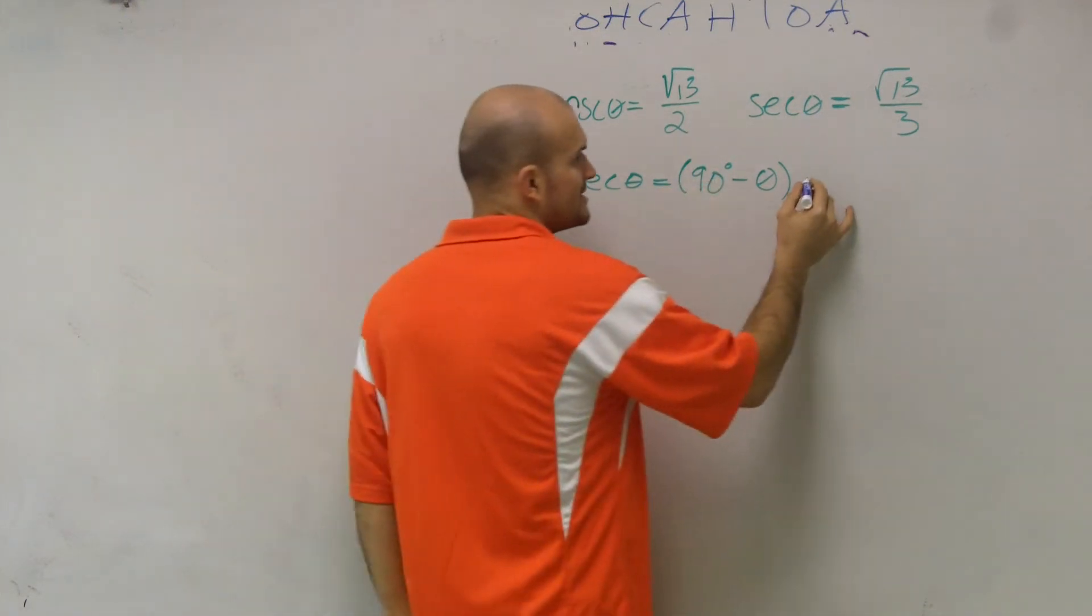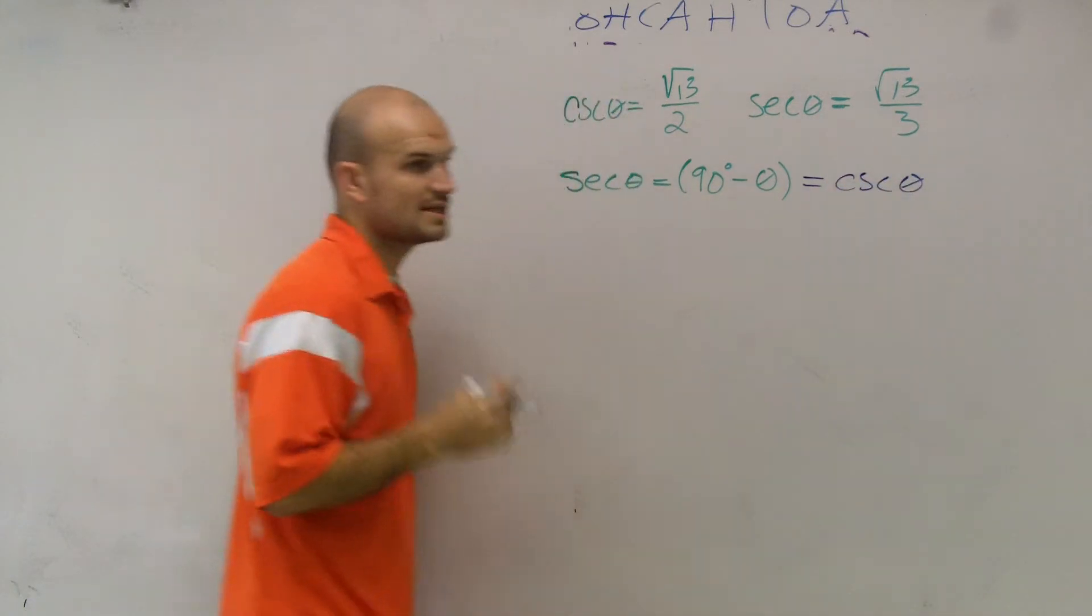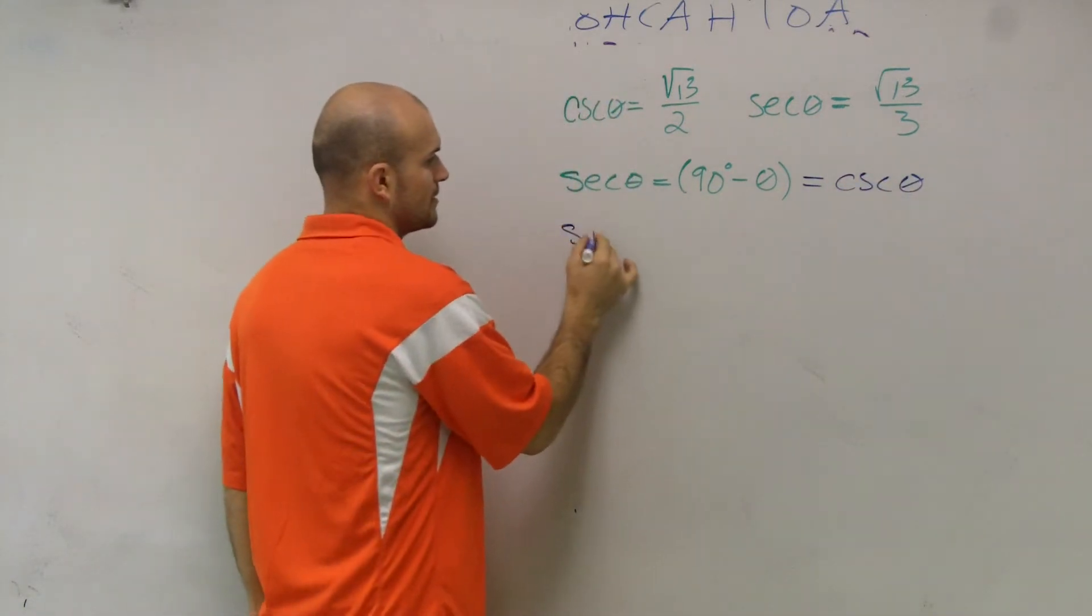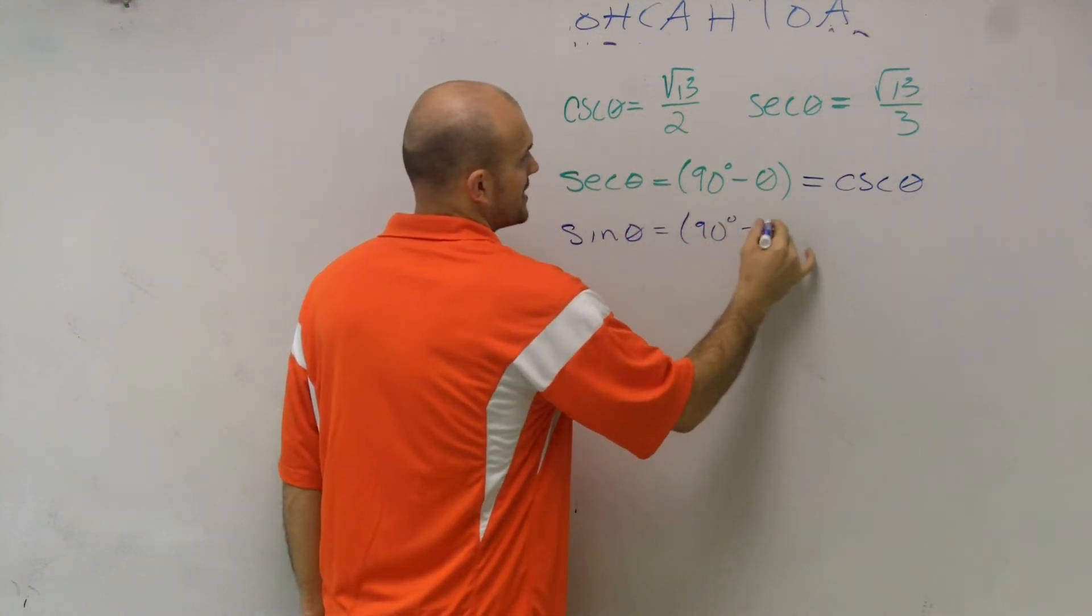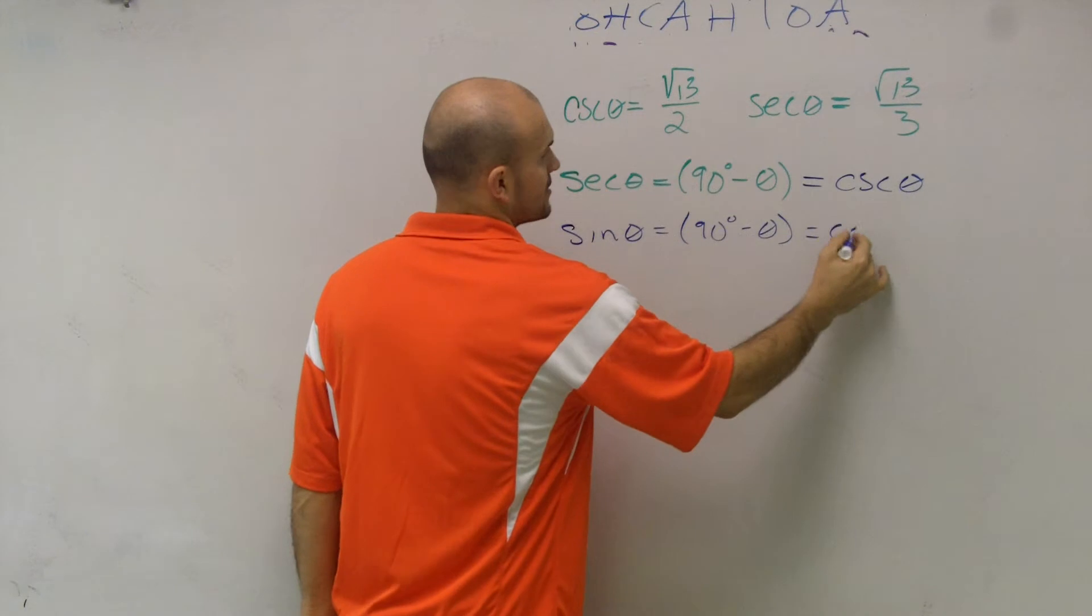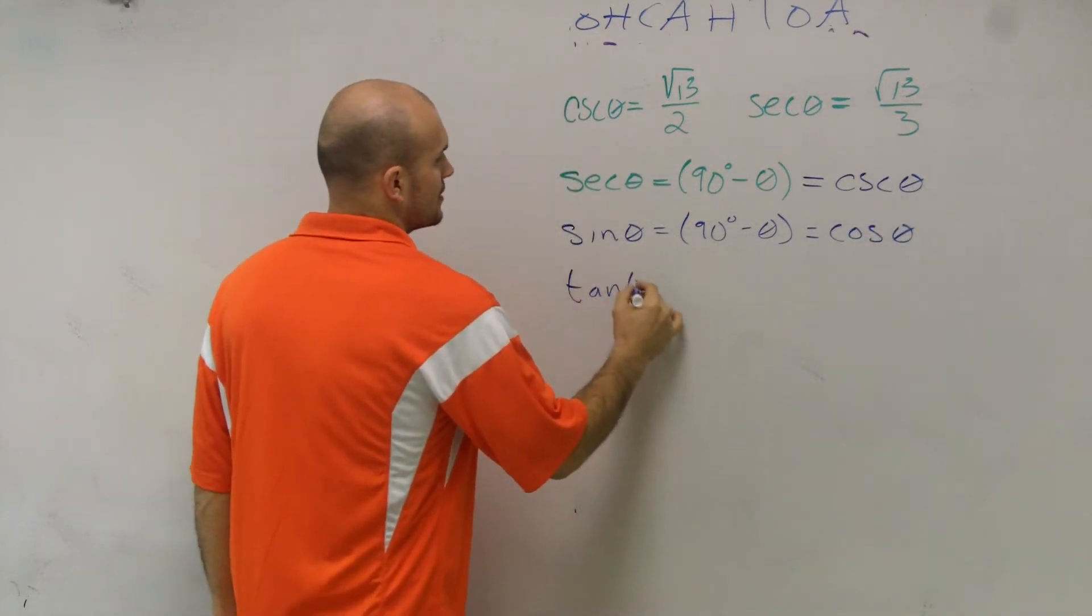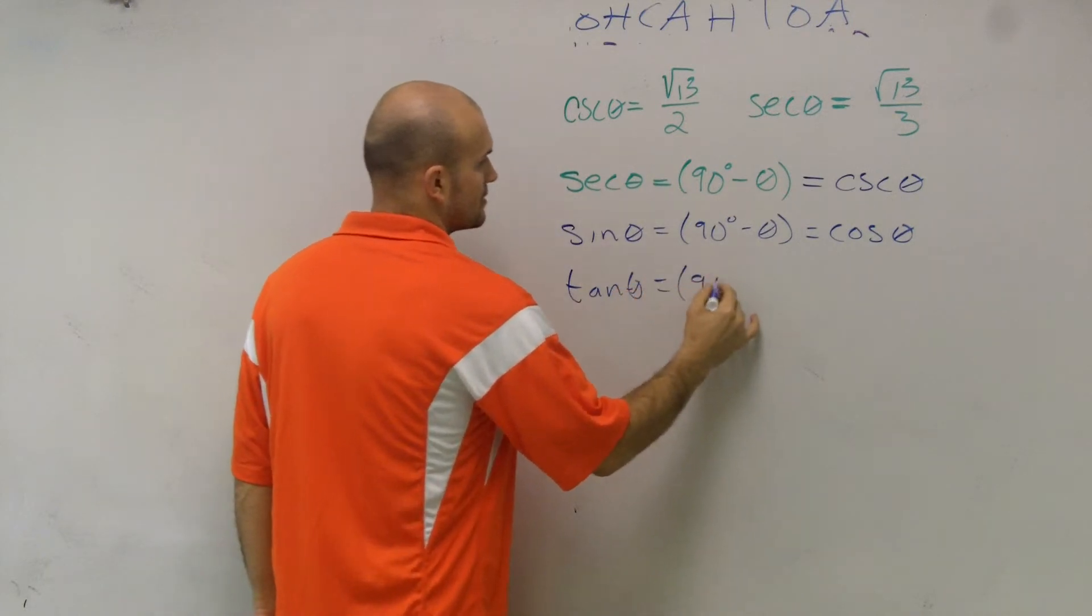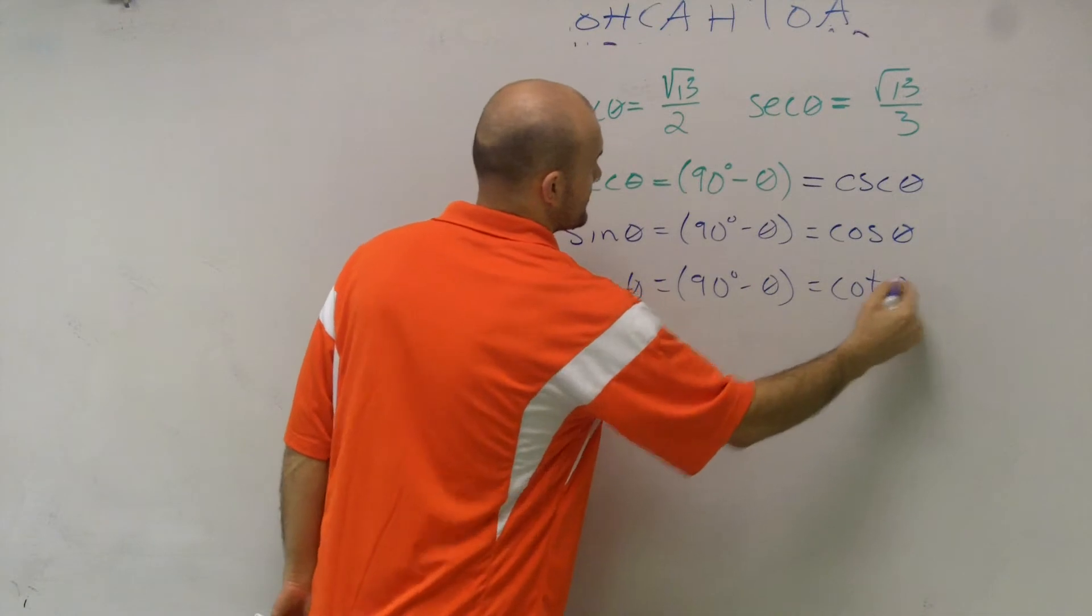There are a couple identities we need to remember. Secant of 90 degrees minus theta equals cosecant of theta. The same thing, sine of 90 degrees minus theta equals cosine of theta. And tangent of 90 degrees minus theta equals cotangent of theta.